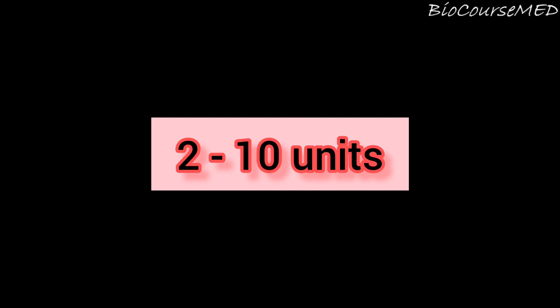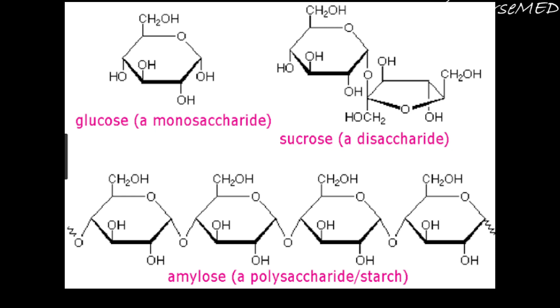Based on the number of carbon atoms, monosaccharides are classified as trioses, tetroses, pentoses, hexoses, and heptoses. Oligosaccharides contain two to ten monosaccharide units which are liberated on hydrolysis. Based on the number of monosaccharide units present, oligosaccharides are further subdivided into disaccharides, trisaccharides, and so on.